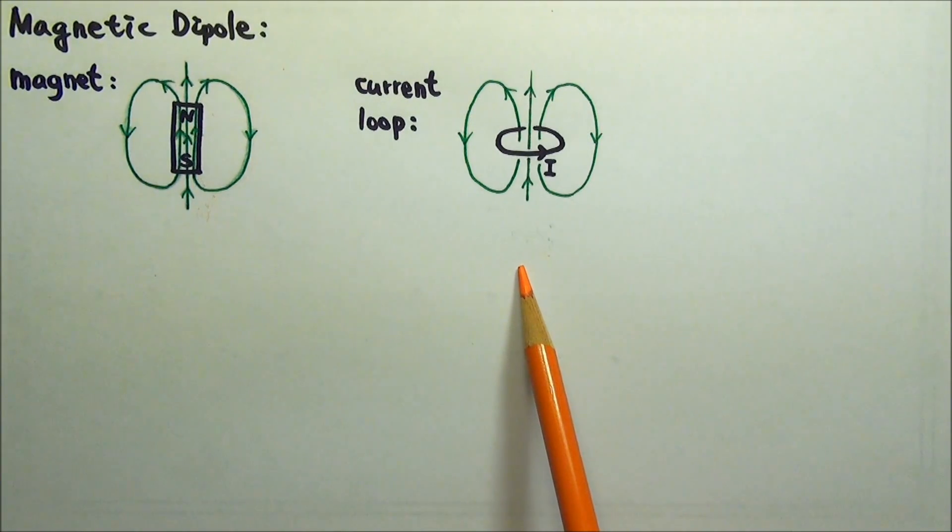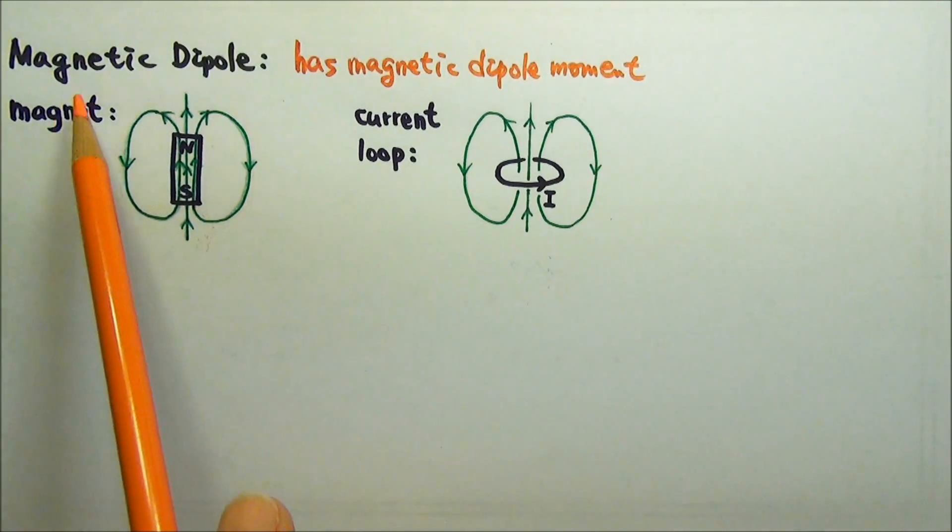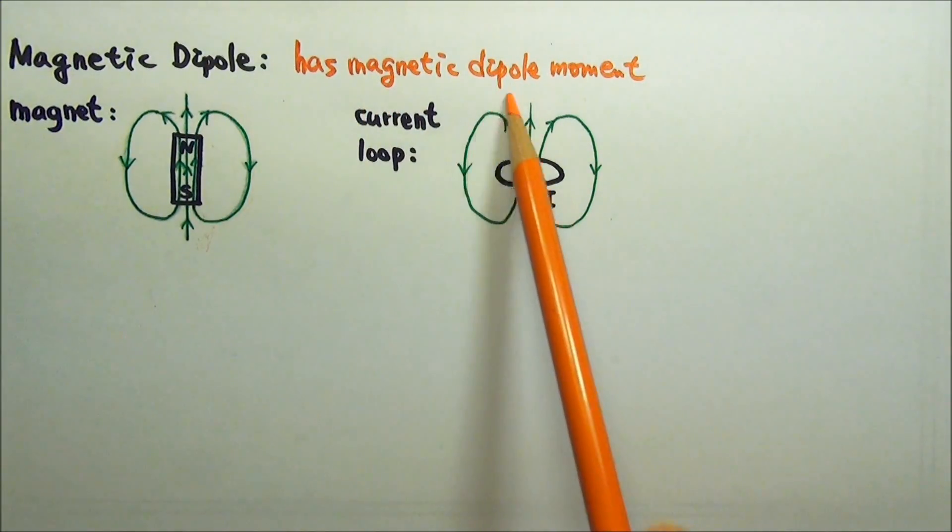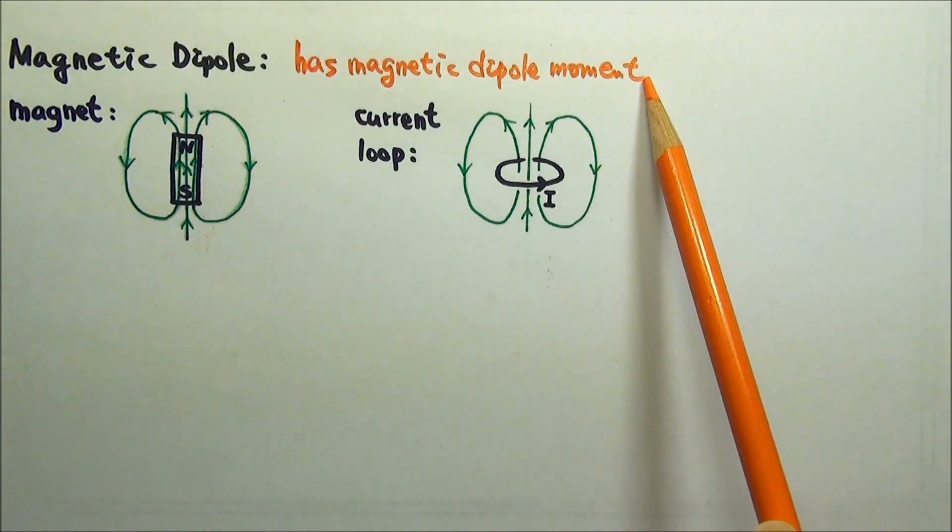Since it produces magnetic field just like a magnetic dipole, a current loop is also a magnetic dipole. A magnetic dipole has a magnetic dipole moment, which represents the direction and the strength of a dipole.